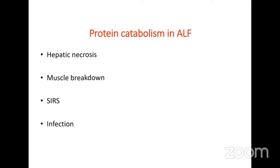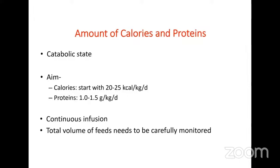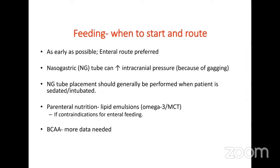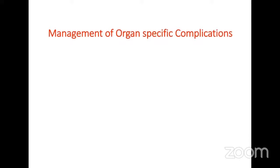The aim is to provide 20 to 25 kcal/kg/day and proteins 1 to 1.5 g/kg/day. Total volume of feeds should be carefully monitored. Enteral route is preferred and feeding should be started as early as possible. Nasogastric tube insertion can increase intracranial pressure due to gagging and should be performed when the patient is sedated or intubated. Parenteral nutrition should be based on overall nutritional status; recent studies did not demonstrate benefit of initiating TPN prior to day 5–7 of critical care presentation.